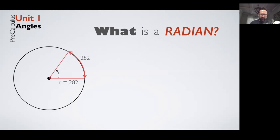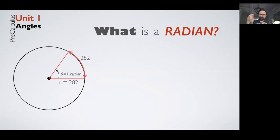If I measure the angle at the center where the arc length — the distance around the curved surface — is equal to the radius, that is what we call one radian. By the way, a radian is approximately 57 degrees — closer to 56 — give or take a little bit.